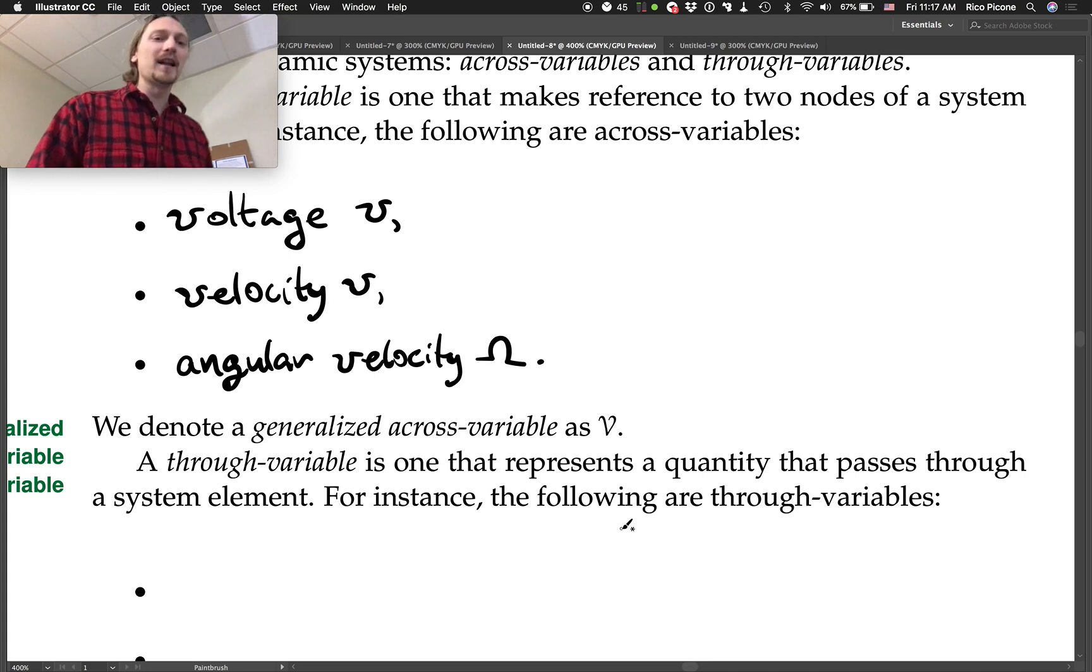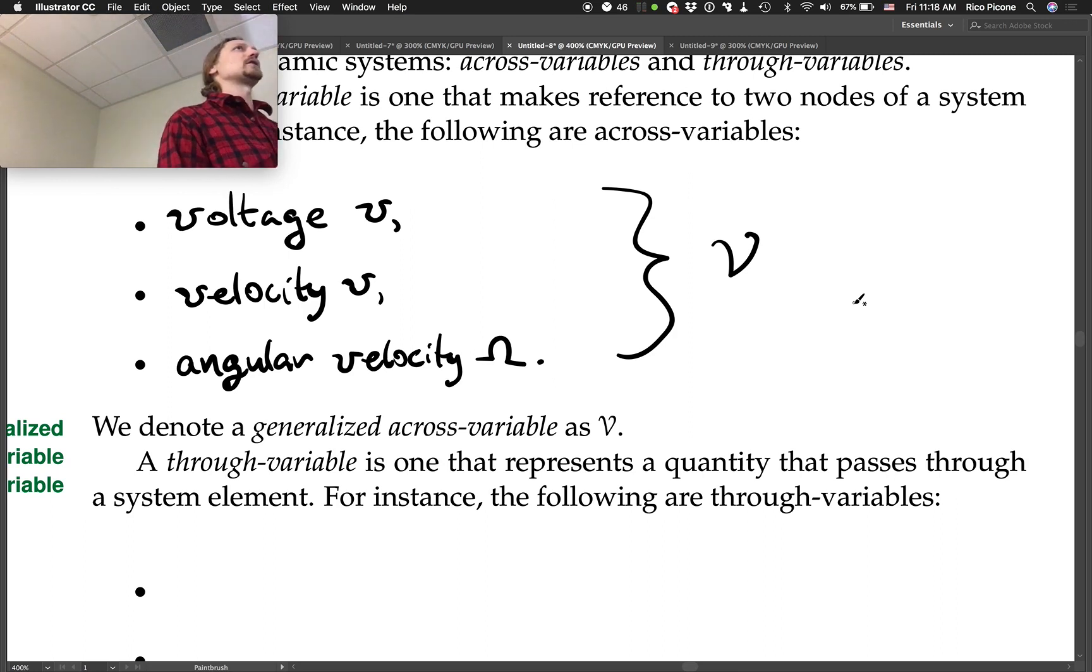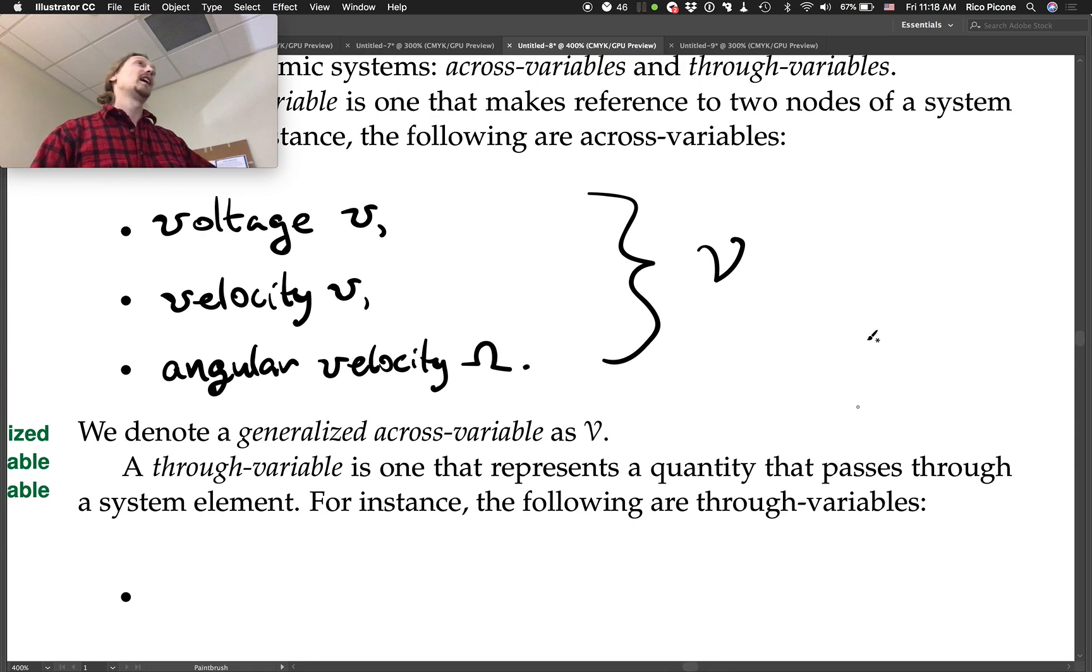So we denote a generalized across variable as script V. So all of these fit under, we can just say, oh, it's an across variable. We'll call it V. We want this as an abstraction, so that we can construct things that apply to all three energy domains and, in fact, to others as well in the future. We're going to say, oh, for an across variable, blah, blah. And so we can make these constructions using script V and don't have to do it for voltage and then velocity and then angular velocity all separately. We can do it just for script V.